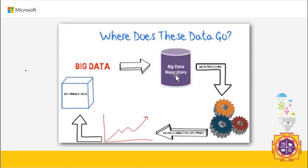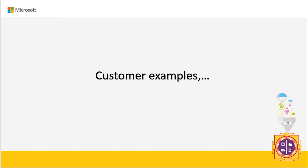The process is as follows: all data is stored in a big data repository, then it's processed, cleansed, and integrated. Via business analytics software, trends are identified and actionable data is produced. This can be achieved with open source tools like Hadoop, Spark, and ML libraries, or via SaaS products such as Azure Data Lake Analytics, Anomaly Detector, Azure ML Studio, Azure AI, and Azure ML. Now let's look at some customer examples.